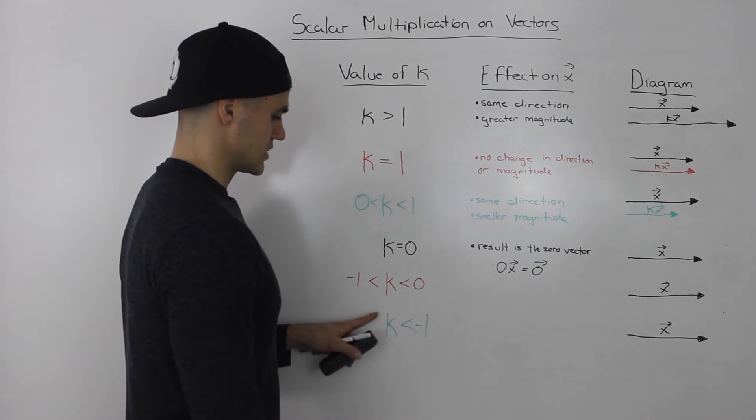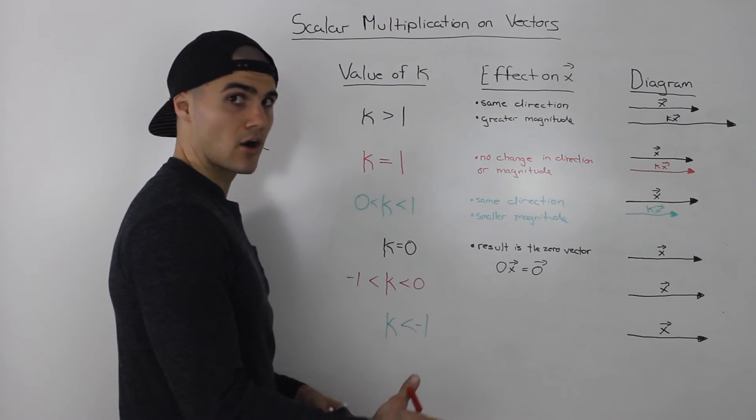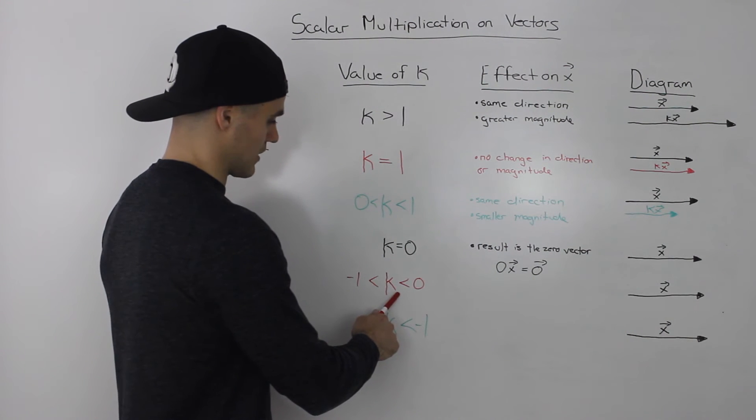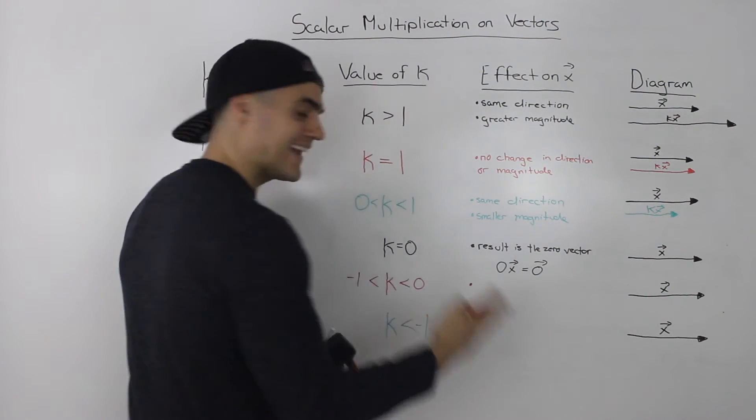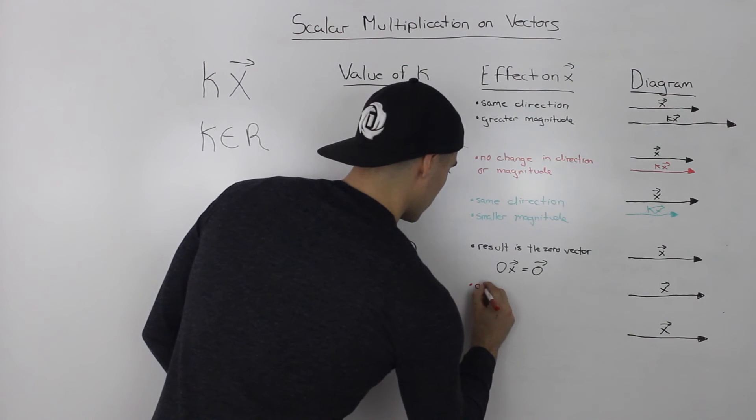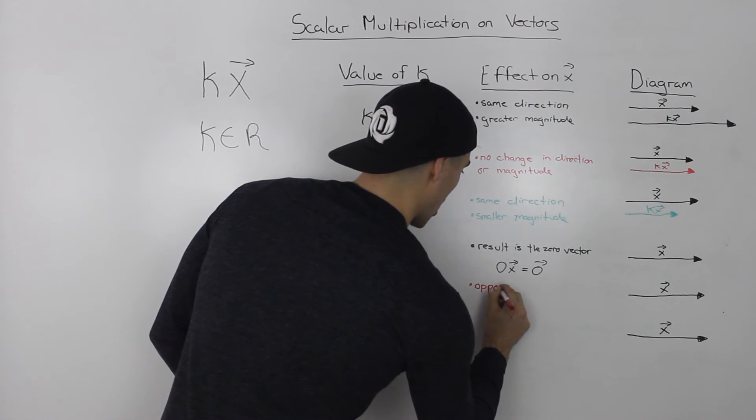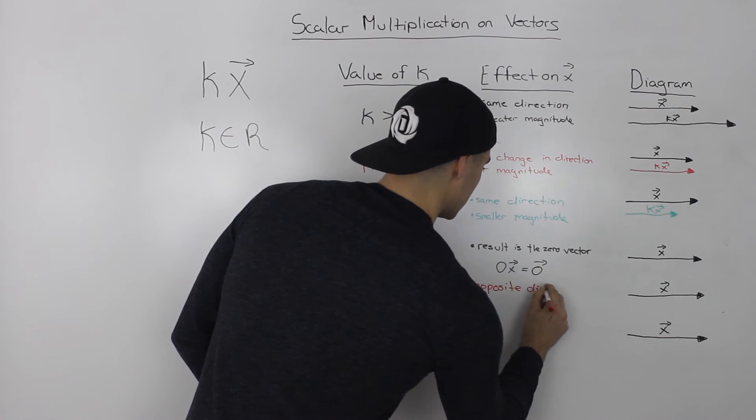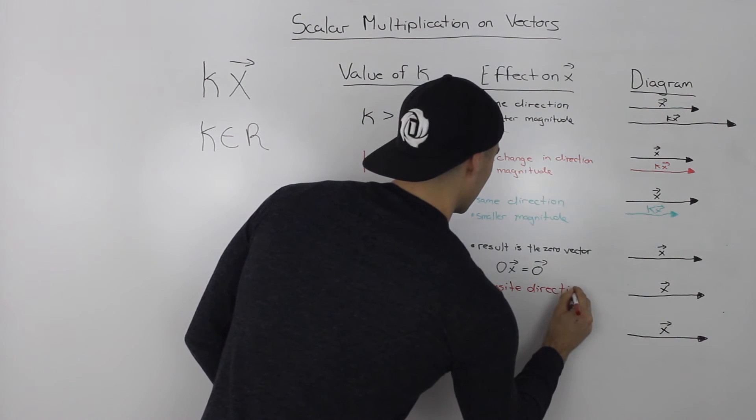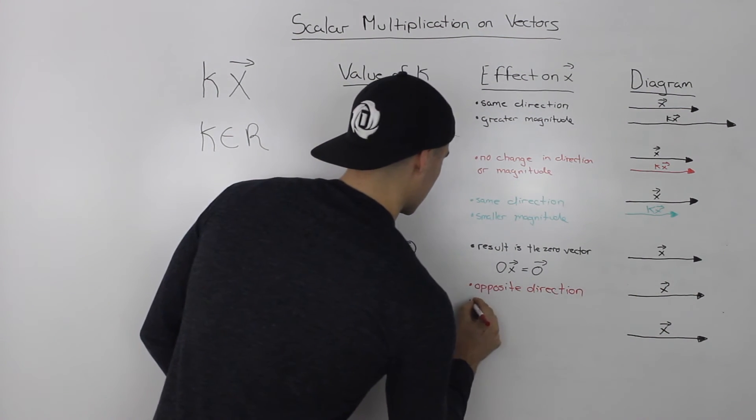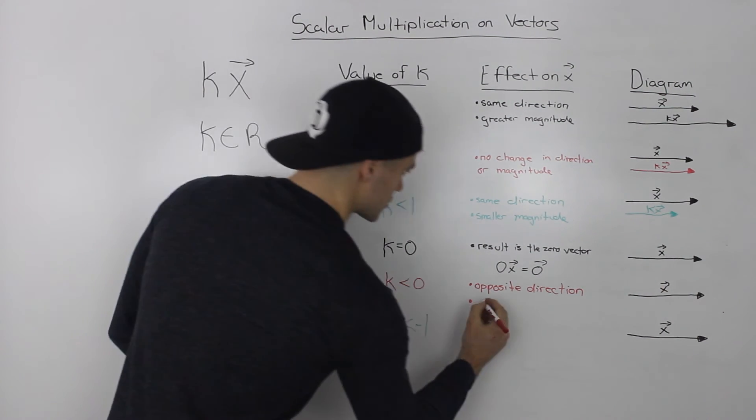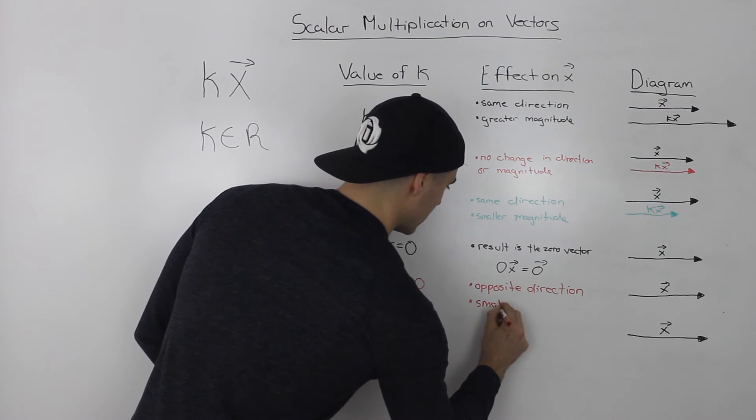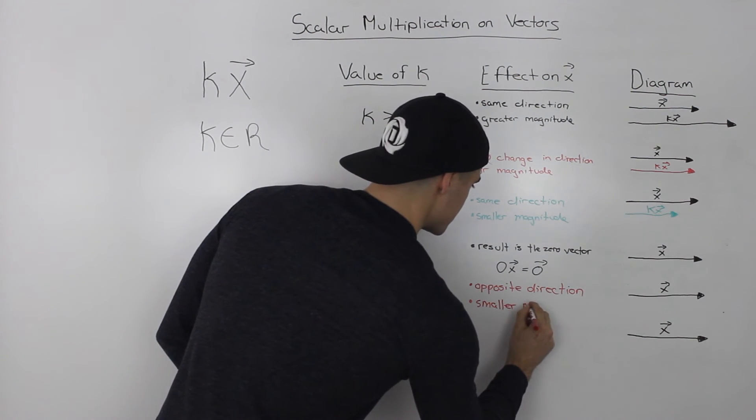Now for these next two cases, we're going to be dealing with numbers that are negative. So let's start with a number that's in between zero and negative one. Well, since you're multiplying it by a negative number, you'll end up with an opposite direction. But the absolute value of that number is going to be less than one, so you'll have a smaller magnitude.